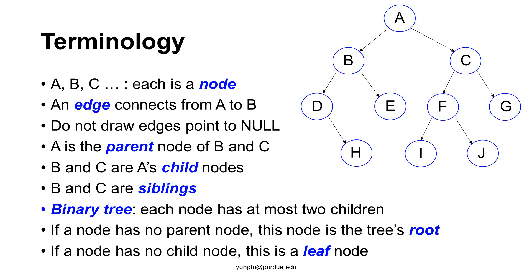In a binary tree, each node may have zero, one, or at most two child nodes. If a node has no parent node, this node is the root of the tree. A tree can have only one root node. If a node has no child node, this node is a leaf node. A tree can have many leaf nodes.